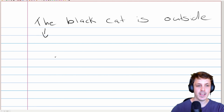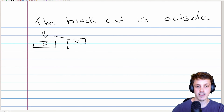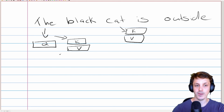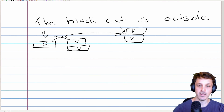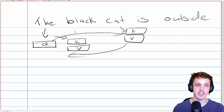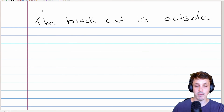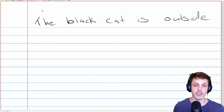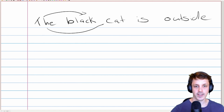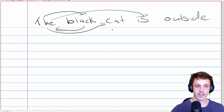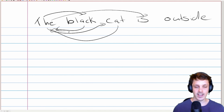Our first token might be 'the', and that's going to produce a query, and it's also going to produce a key-value pair. Every token in our sequence is also going to produce those — 'cat' is also going to produce a key-value pair. What we're going to allow is for every token to query every key, and therefore pull the value information from that embedding. So they can all query each other.